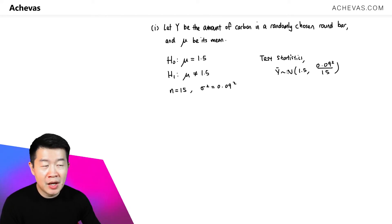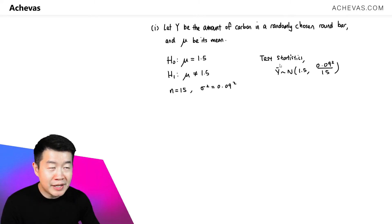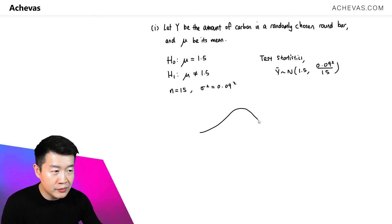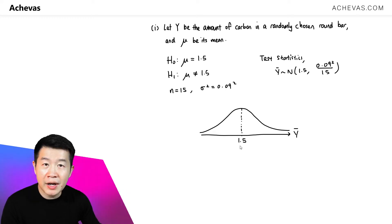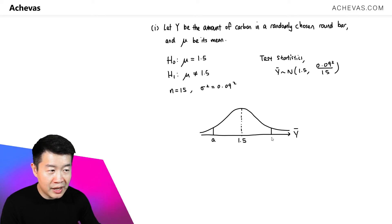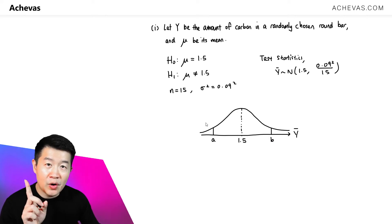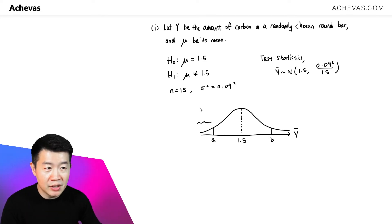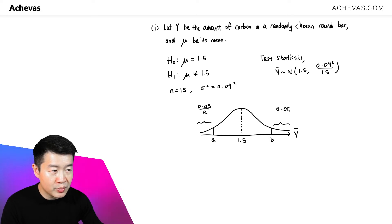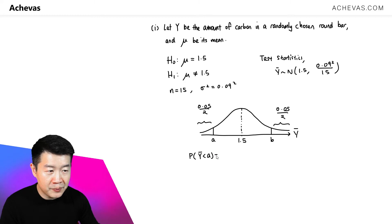We are supposed to quote the critical region, and we are working with a level of significance of 5%. Based on the test statistics, we sketch a bell curve for Y̅ with the line of symmetry at 1.5. Since it is a two-tail test, we let the left tail value be a and the right tail value be b. For a 5% level of significance, each tail area is 0.05 divided by 2, so the probability that Y̅ is less than a equals 0.025.